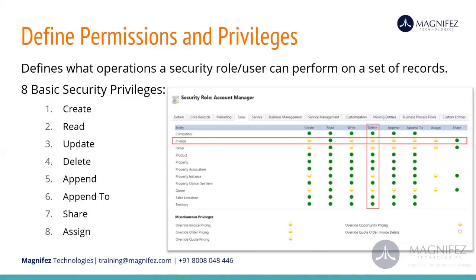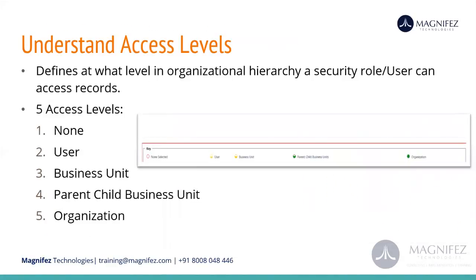Privilege means what operation a user or a security role can perform on a set of records in your CRM system. We also need to understand access levels. We have five access levels: none, user level, business unit level, parent-child business unit level, and organization level. The combination of your access level and your privileges indicates what operation a particular user can perform on a single record and at what level in the organization.